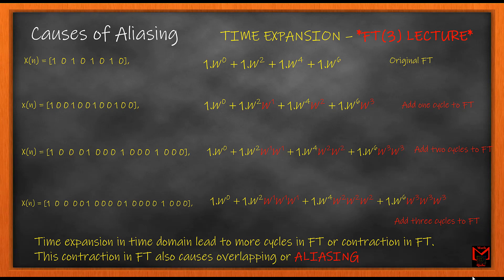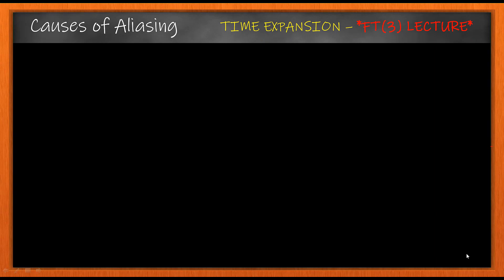Another cause of aliasing is time expansion of a signal, which was already discussed in Fourier Transform Class 3. Time expansion in the time domain leads to more cycles in the Fourier transform, or contraction in the Fourier transform. This contraction in the Fourier transform also causes overlapping or aliasing. The video demonstration makes this clear.